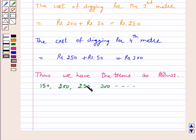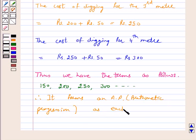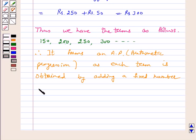Therefore it forms an AP that is arithmetic progression as each term is obtained by adding a fixed number, in this case it is 50. Rupees 50 is a fixed number to the preceding number.